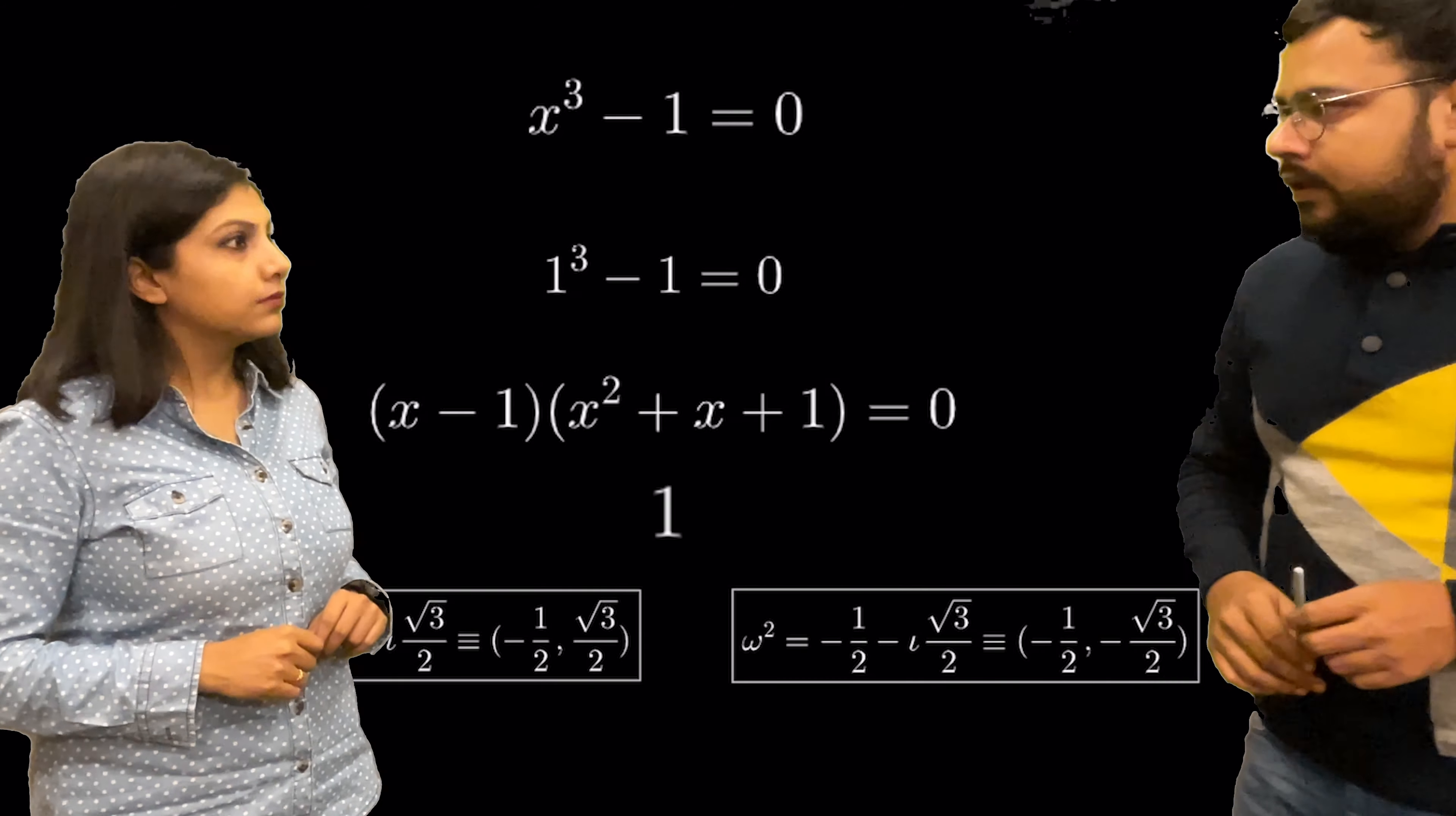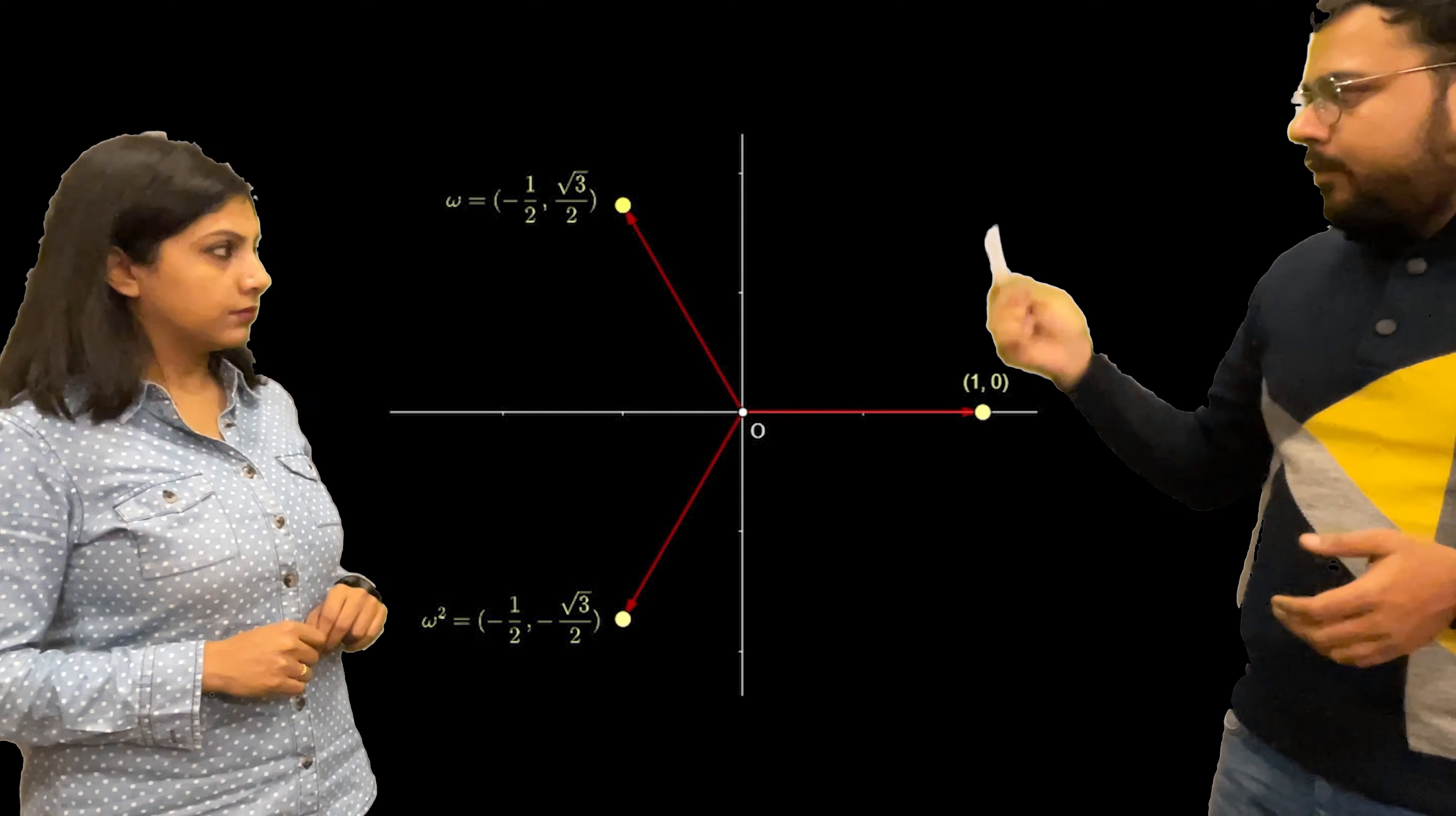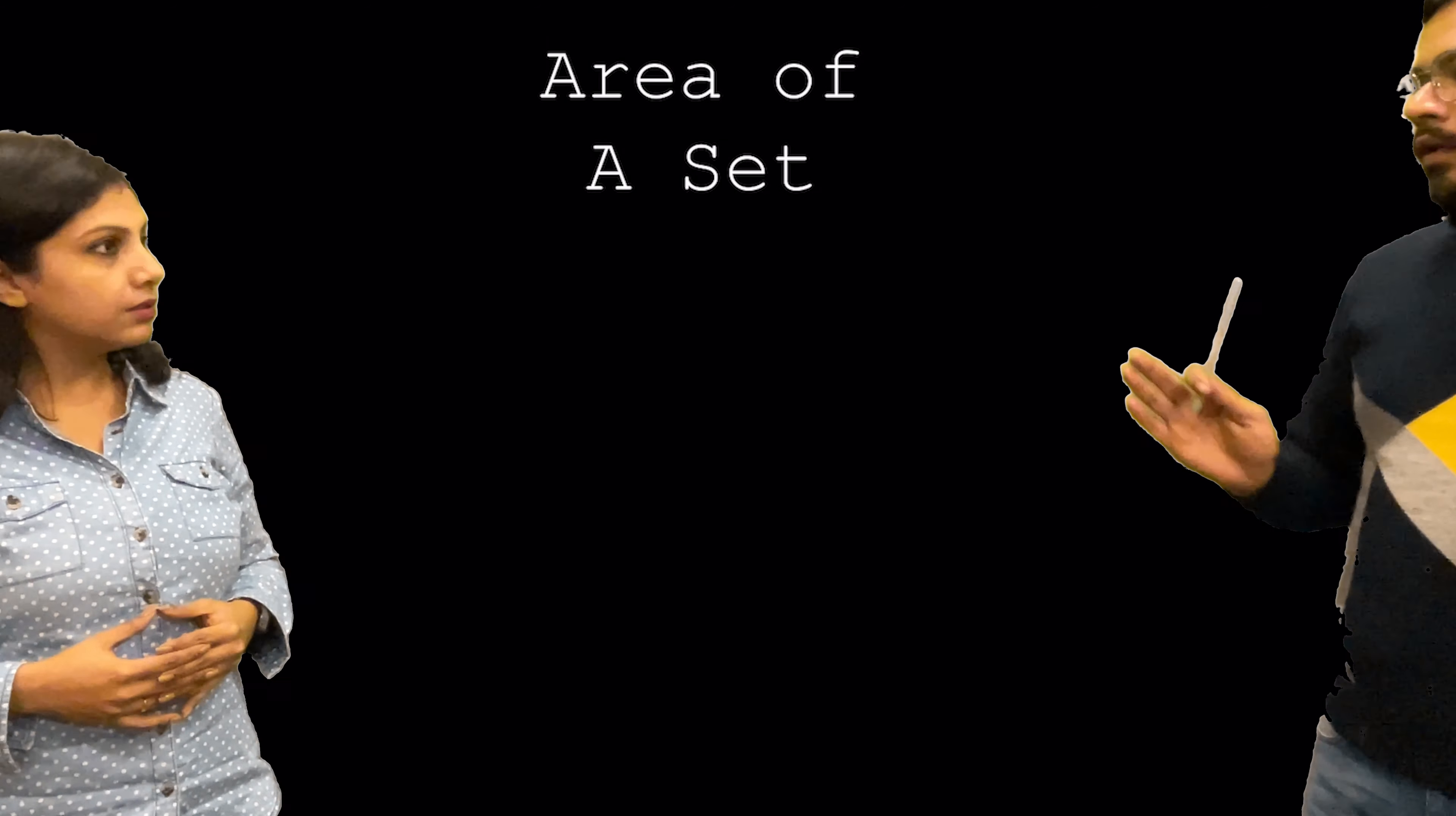Now, let us see this complex number as vectors. As I said, any complex number can be taken as vectors. So let's see the positions of this complex number on the plane and we can see these vectors here. Let us now talk about area of a set, which is the main concept of this problem.